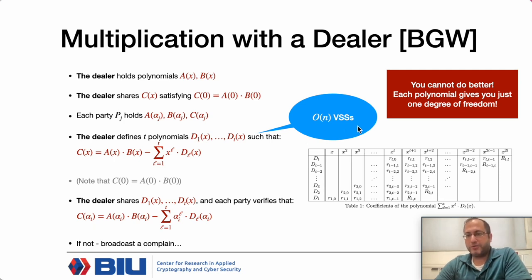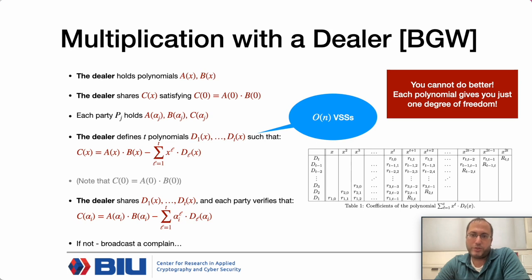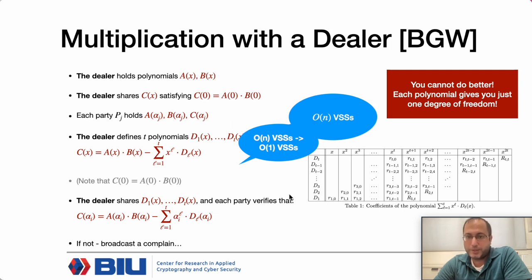This linear number of VSSs seems essentially necessary because to remove one leading coefficient, we can only hide one coefficient per degree-t polynomial. To remove t coefficients it seems we must share t polynomials. What we show in this work is how to implement this exact functionality with just one single VSS instead of a linear number of VSSs.